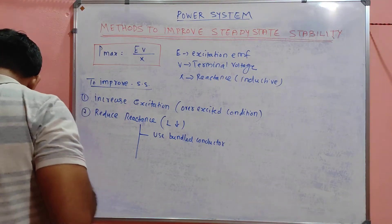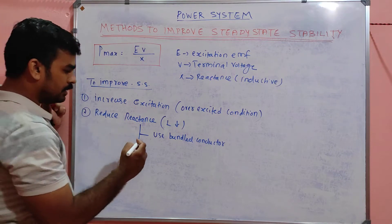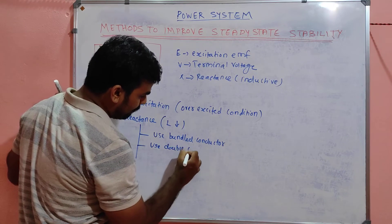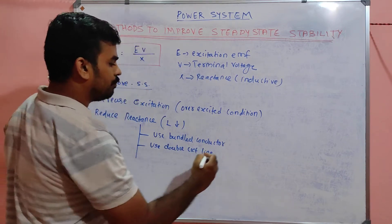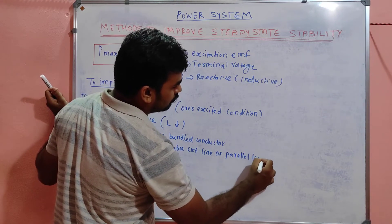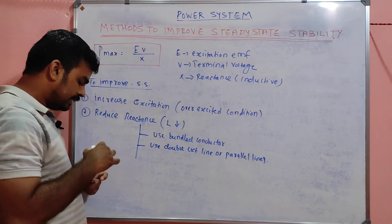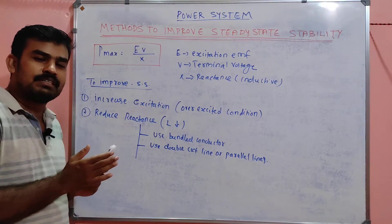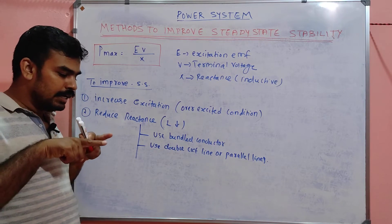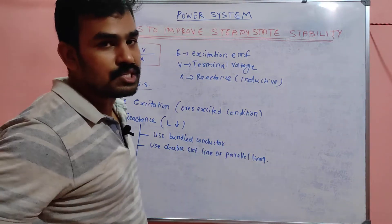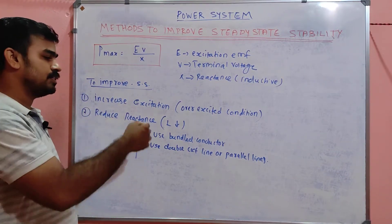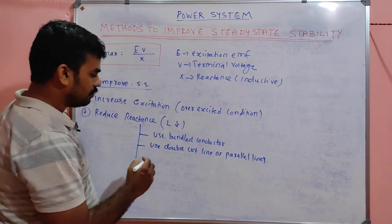The next point is to use double circuit lines or parallel lines. Using a double circuit line is essentially a version of the bundled conductor concept. If you use double or parallel lines, the inductance due to neighboring conductors will automatically cancel out and the effective inductance will be reduced.